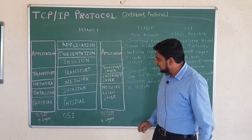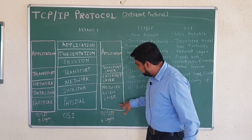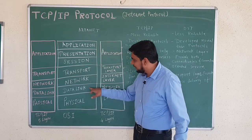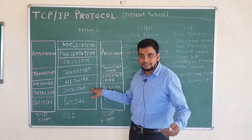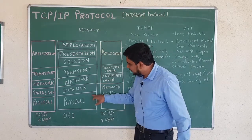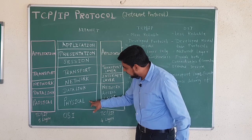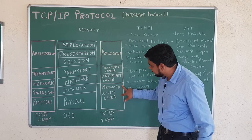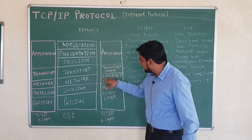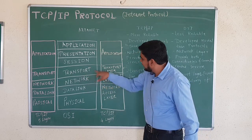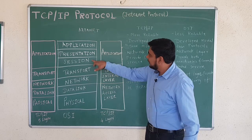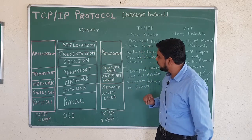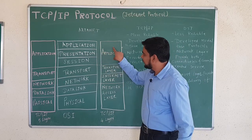Here, what is the difference? In the TCP/IP model, the last 2 layers of OSI — that is the data link layer and physical layer — are merged and called as network access layer. The network layer is called as internet layer. Transport layer remains as transport layer, and the functions of session, presentation, and application layers are merged as a single application layer.